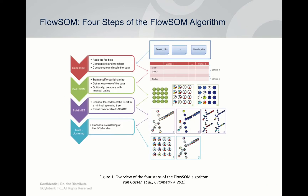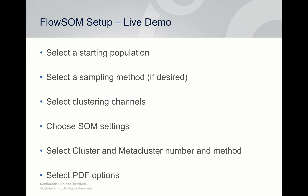How does FlowSOM work? There are four main steps. First, it reads in the data. Second, it builds the self-organizing map, which determines where to put different phenotypes once it has the clusters. Third, it builds a minimum spanning tree, similar to a SPADE representation. Lastly, there is the meta-clustering step. The first step in FlowSOM is to select a starting population, which we'll look at in just a moment.